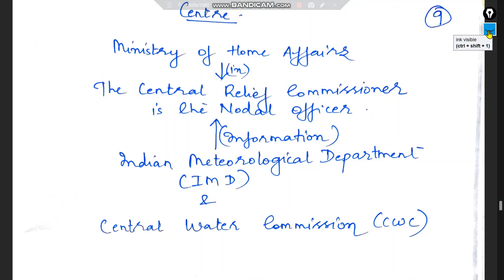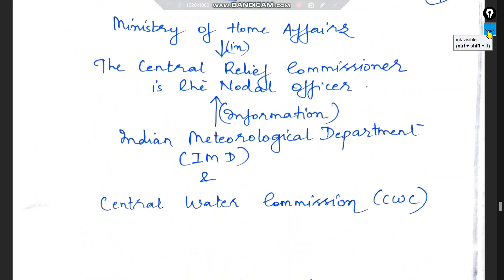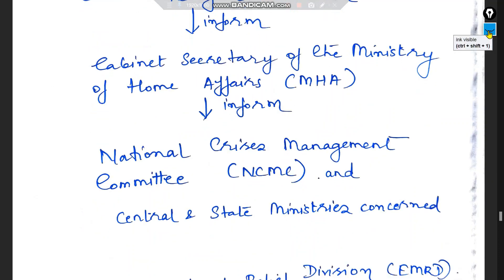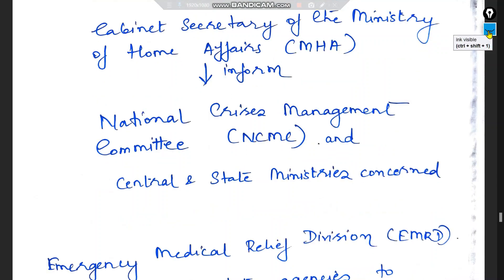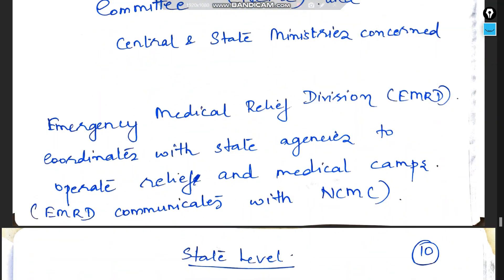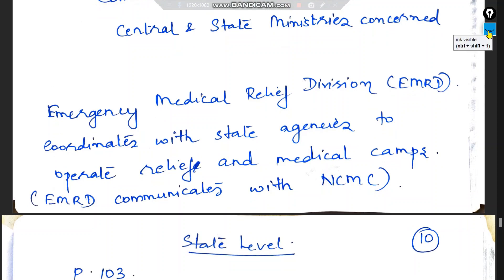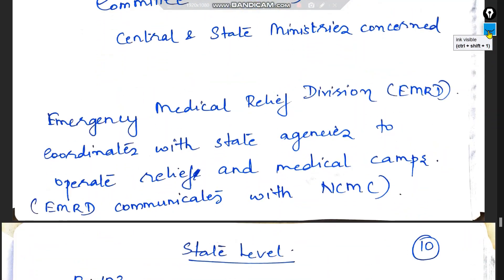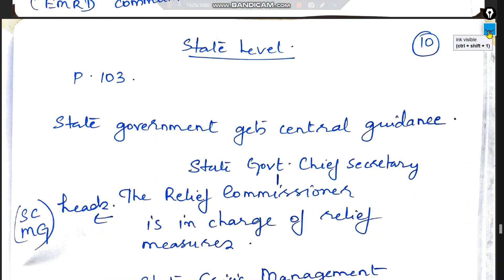Central disaster management is managed mainly by the Ministry of Home Affairs. In the Ministry of Home Affairs there is a Central Relief Commissioner who is the nodal officer. This nodal officer gathers information and communicates to the Cabinet Secretary who informs the NCMC and relevant central and state ministries. The Emergency Medical Relief Division (EMRD) coordinates with state agencies to provide relief and set up medical camps.